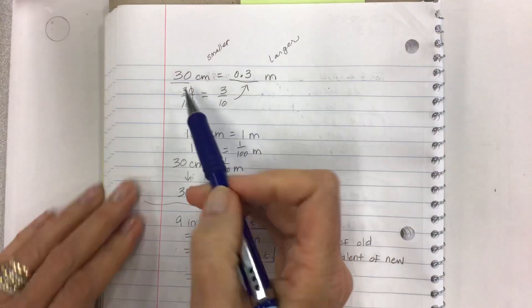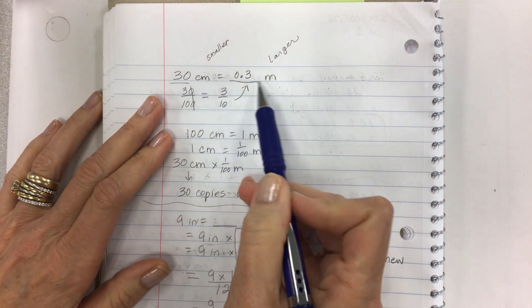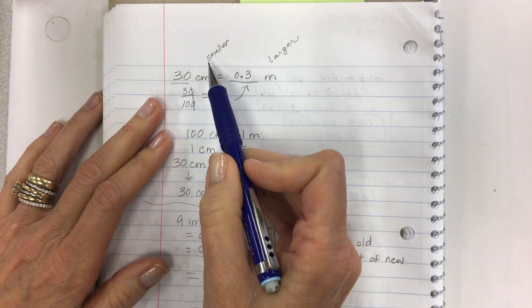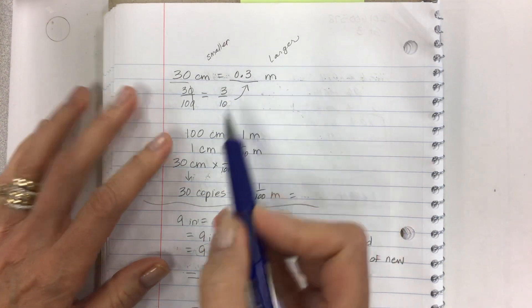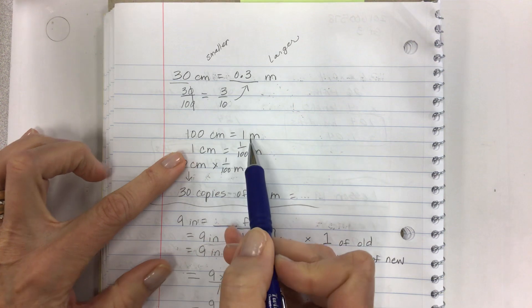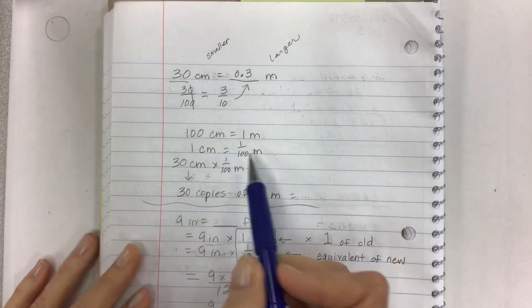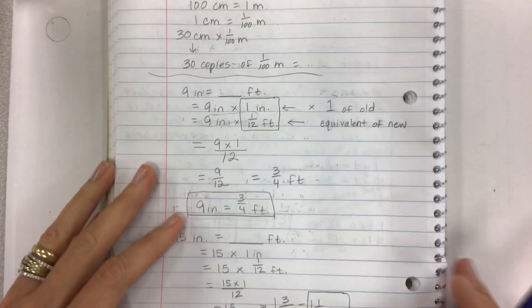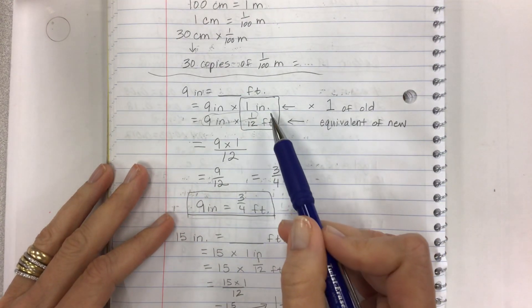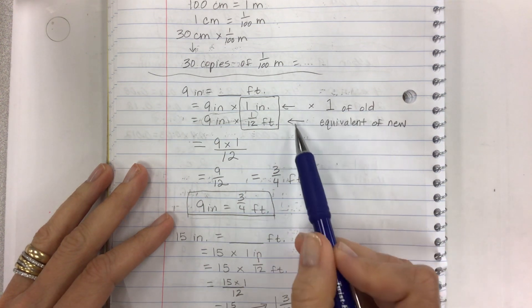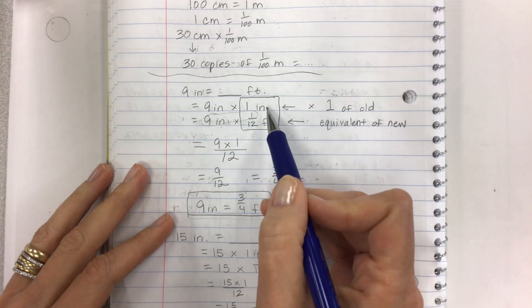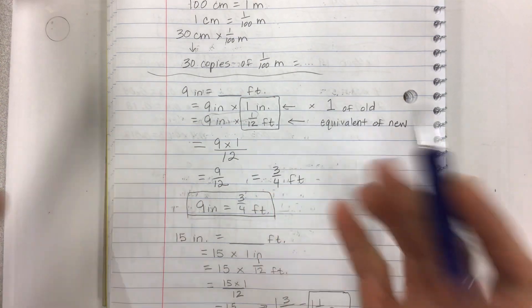30 centimeters equals how many meters? We're going from smaller units to larger units. You have to know that 100 centimeters equals a meter. That's going to be on that other page that I just referred to. And set it up. The equivalent times 1 right here. Times 1 of the old, and then the equivalent of the new. Let's get into the lesson so I don't end up doing notes for the whole thing.